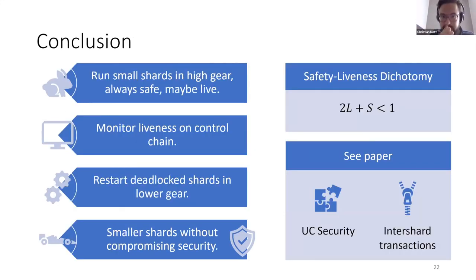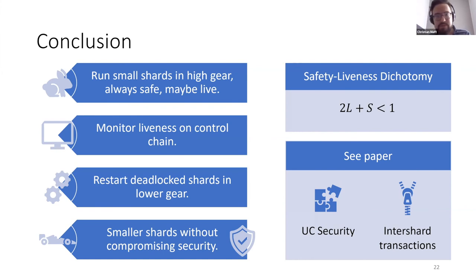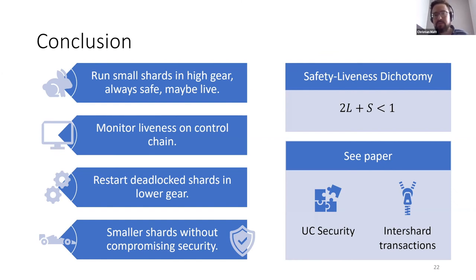To conclude: our approach allows you to run shards that are very small, always safe, and likely live if you have chosen good parameters. You use a control chain that is always live and safe to detect if liveness does not hold, and you can restart shards in lower gear until you have liveness. Optimistically, you can have much smaller shards, giving much better efficiency when you have less than worst-case corruption. The paper also includes a formalization and composable security proofs of our protocols, as well as a discussion of cross-shard transactions. Thank you.